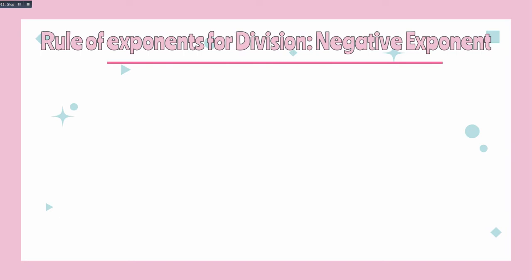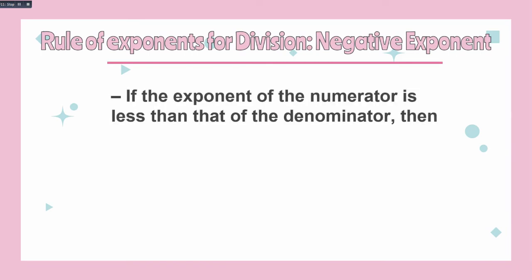Rule of exponents for negative exponents. First, if the exponent of the numerator is less than that of the denominator, then we will follow the concept of x raised to m over x raised to n, and that will be equal to 1 over x raised to n minus m.